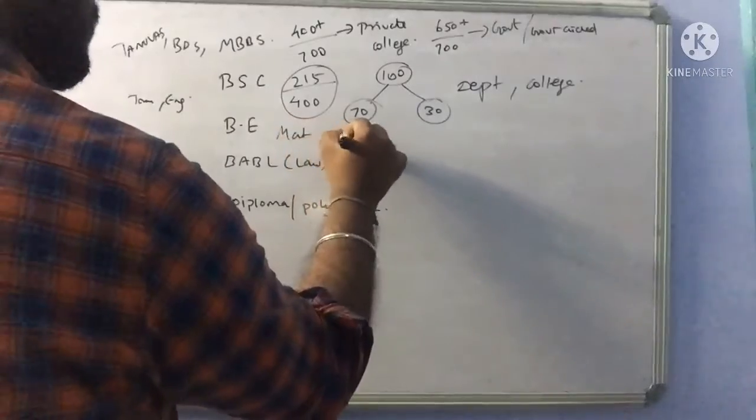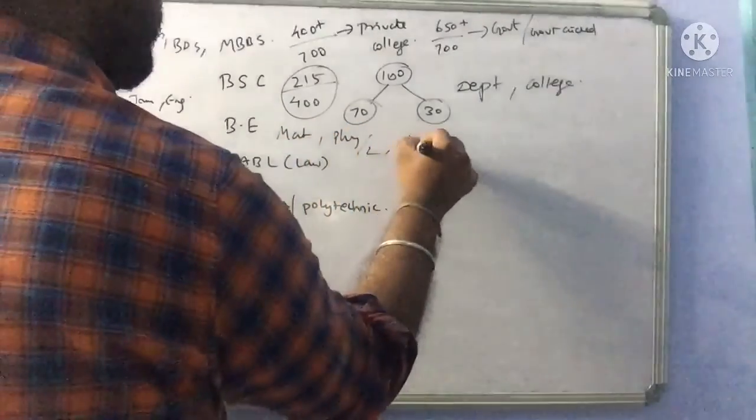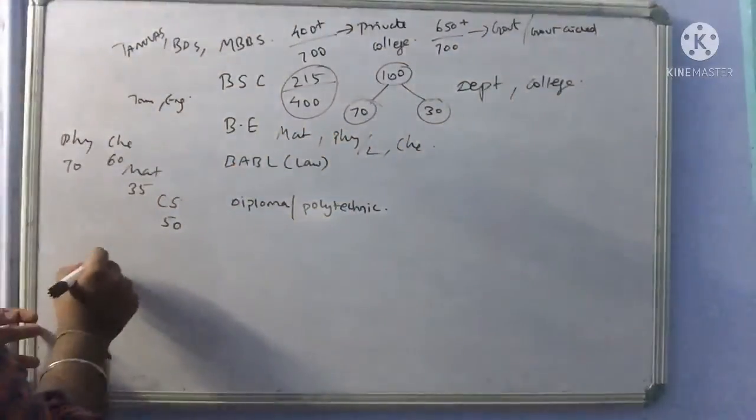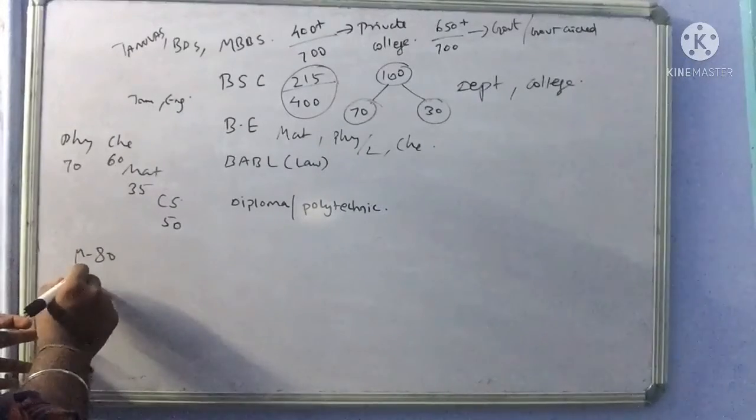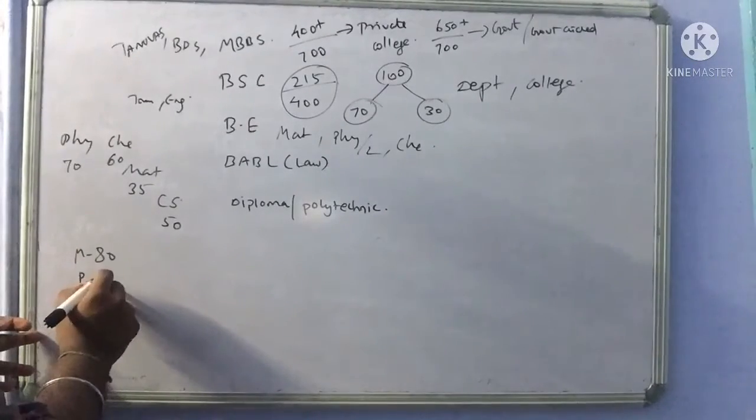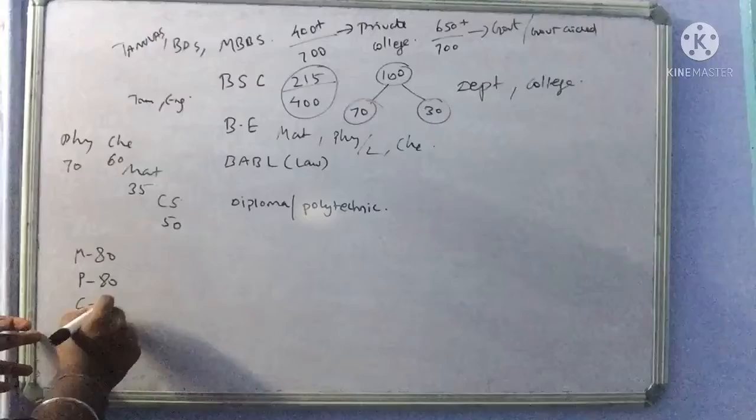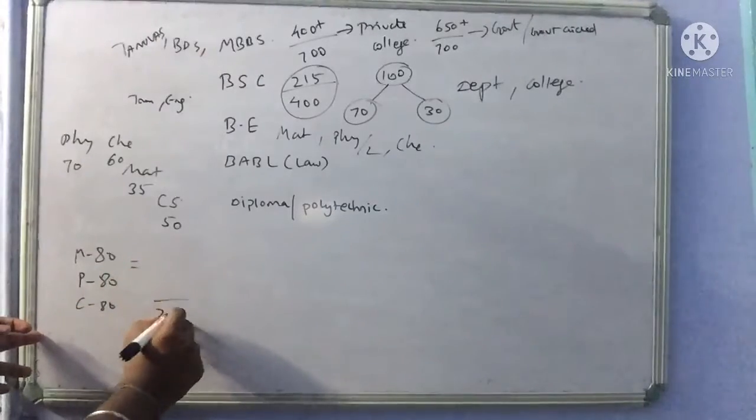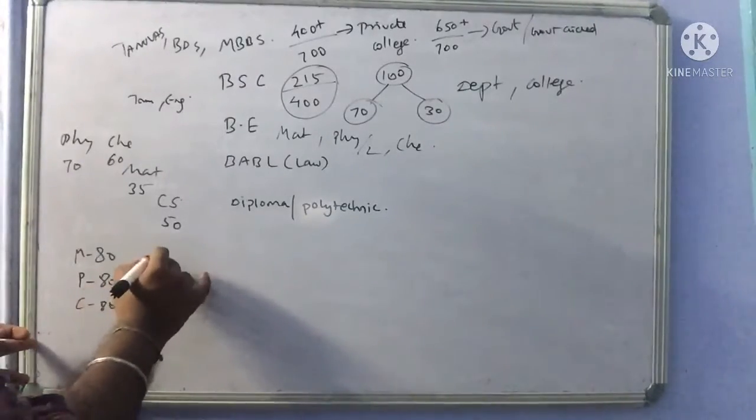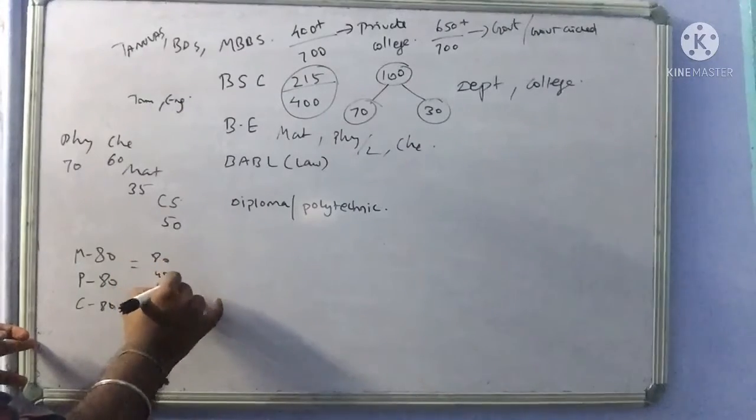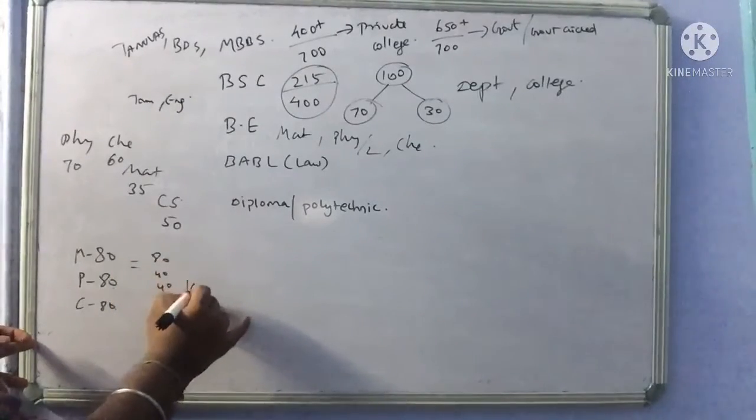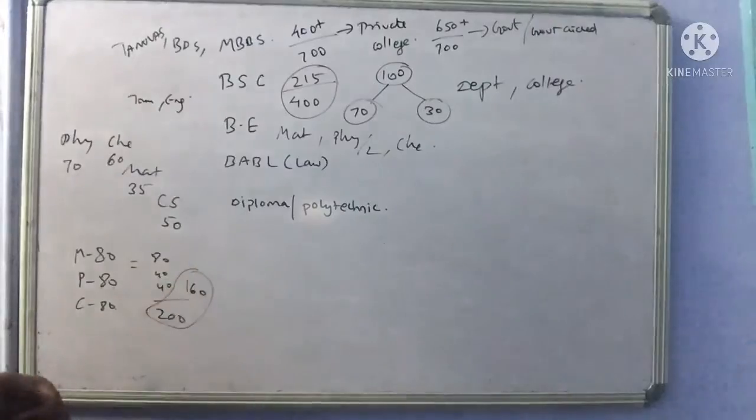We will talk about physics and chemistry. If we talk about this, it is 60 or 60, 50. Let's talk it up according to the administration. There are values of two different colleges.